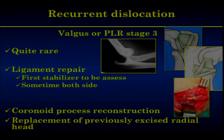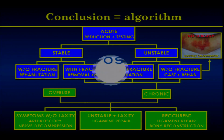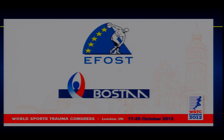Recurrent dislocation is a special case — it's when soft tissue didn't heal correctly after reduction. It's quite rare. When you have to stabilize this recurrent dislocation, you stabilize both sides — lateral and medial — and rebuild the coronoid process when it has been destroyed. This is the only place I propose a radial head replacement when it has been previously excised. In conclusion: dislocation is an emergency — reduce it immediately. Once reduced, you need a specialized opinion to determine if surgery is needed. The algorithm: reduce, test, if stable without fracture start rehab; with fracture remove the fragment; if unstable with fracture fix it; without fracture apply a cast and start rehab to avoid chronic sequelae.